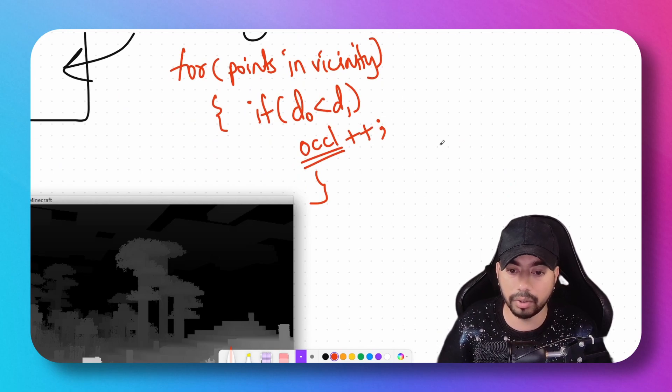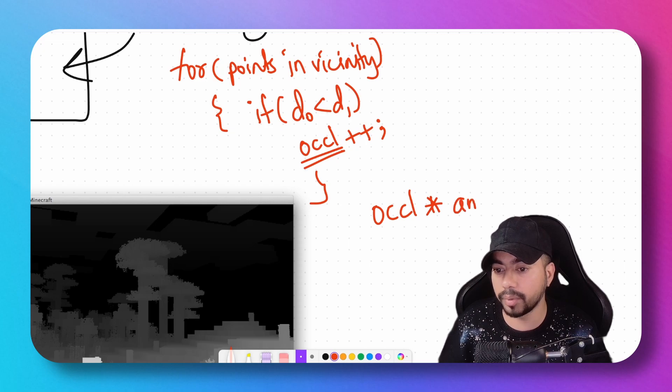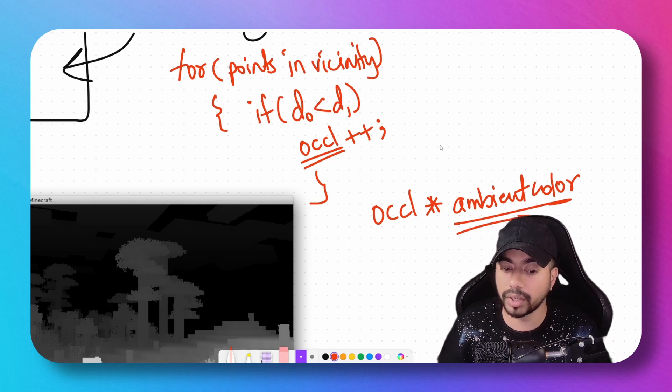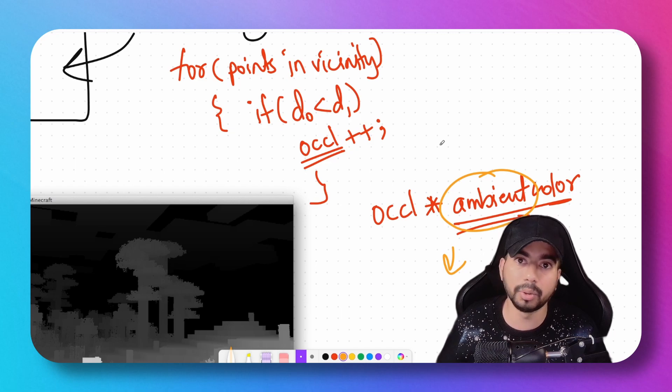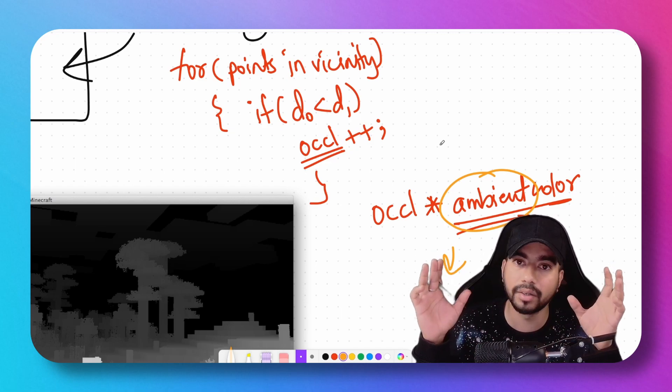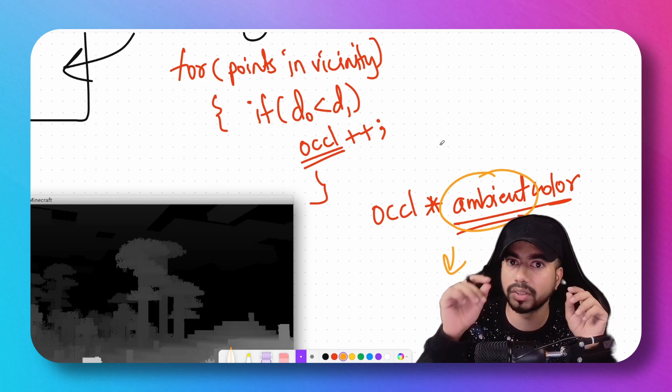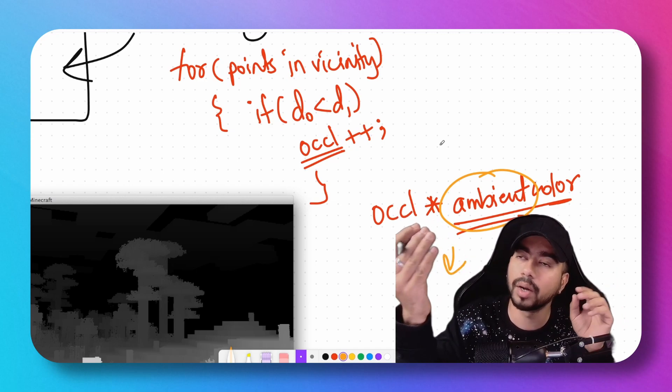You can use this occlusion value to multiply it with the ambient color. Now what is ambient color? Ambient color is color due to ambient light. What is ambient light? If there's no light in your room—if you switch all the lights off—still there would be some light coming from a window, some light which is not a direct light ray but lights up the atmosphere. That is ambient light. So we multiply this (1 - occlusion) term with the ambient...